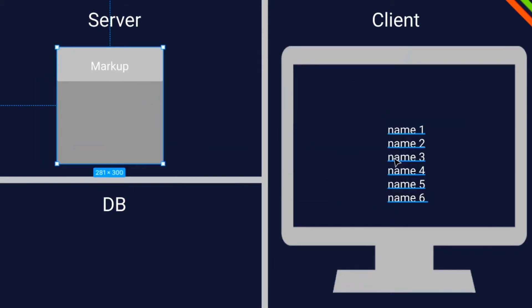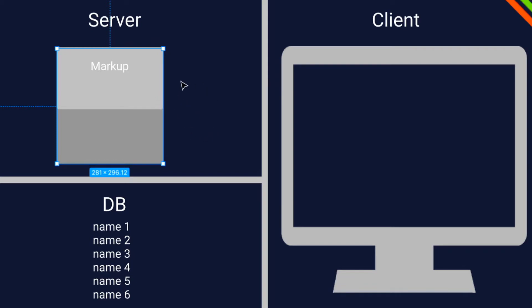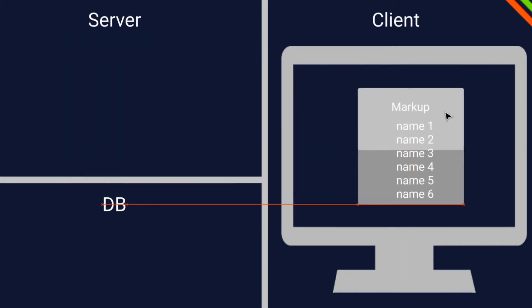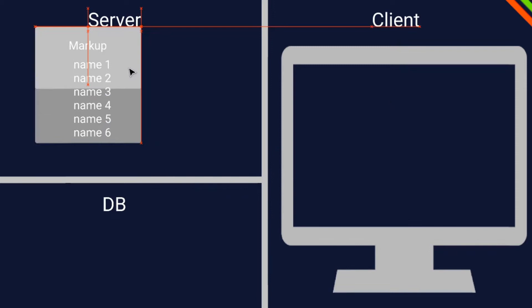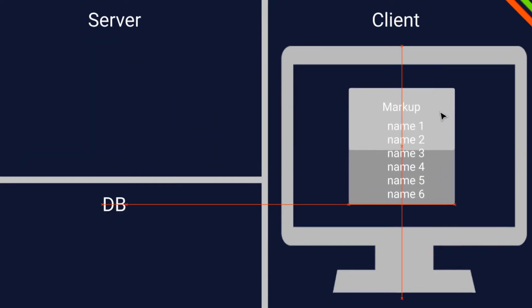The next fetching method is static site generation. Let's say we change something in our markup on our local machine and push those changes to Git, mostly GitHub. That will in many cases trigger a rebuild of the site. While doing that rebuild, we fetch the data and put it in as a static site. On every rebuild we fetch the data, put it in statically, and then we can just serve this pre-built markup with data to the client.